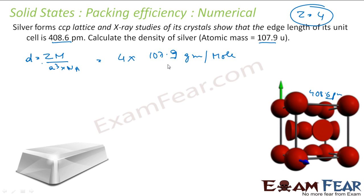By A³ - what is A³? A is 408.6 picometers. I will convert into cm: 408.6 × 10^-10 cm cubed. Why? Because I want density in g/cm³. This is grams.